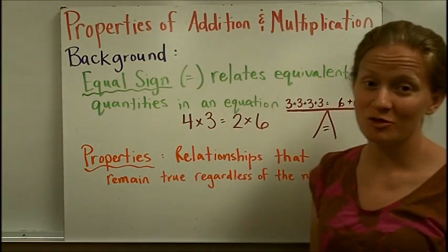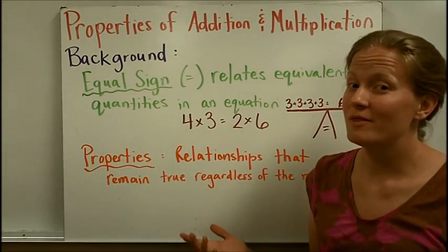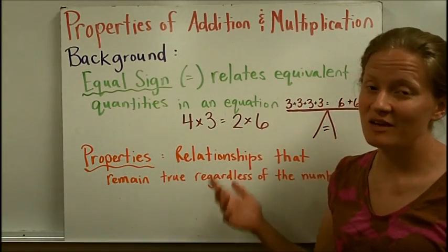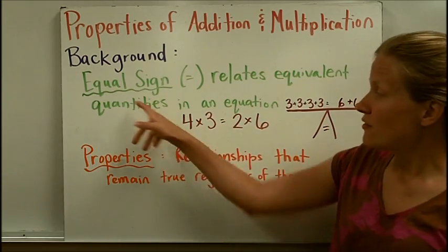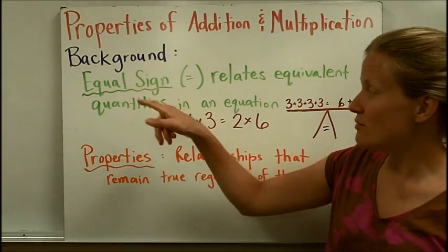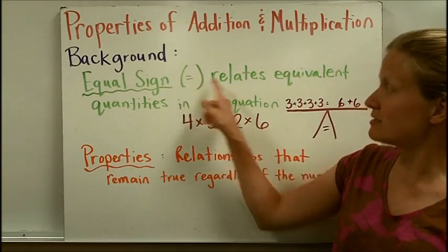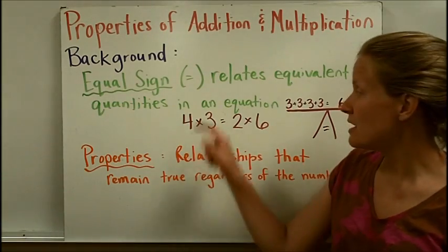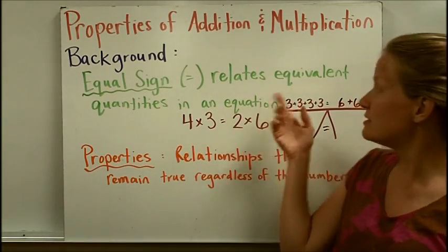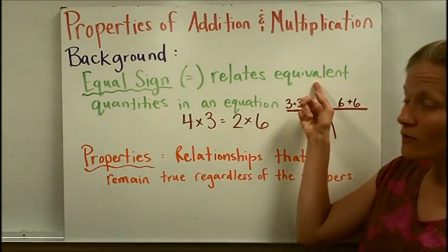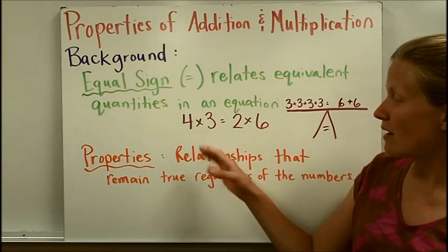Properties of addition and multiplication. Before we can talk about the properties, we have to have two things in mind. First of all, the equals sign relates equivalent quantities in an equation — quantities that are equal to each other, equivalent, worth the same amount.